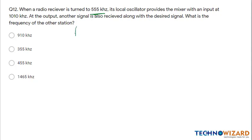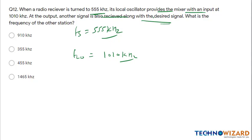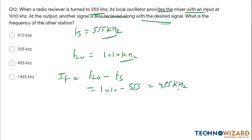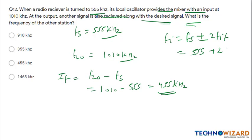Question 12: A radio receiver is tuned to fs = 555 kHz and the local oscillator frequency is fLO = 1010 kHz. Intermediate frequency fIF = fLO − fs = 1010 − 555 = 455 kHz. The image frequency = fs + 2×fIF = 555 + 2×455 = 555 + 910 = 1465 kHz. Option D is the correct answer.